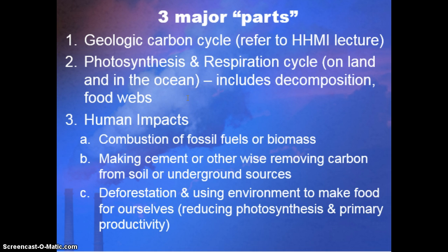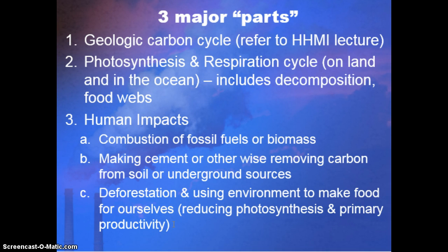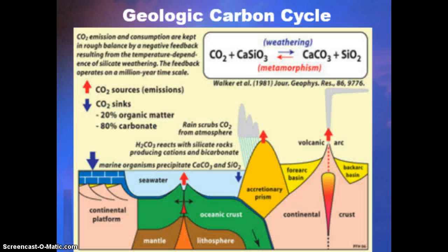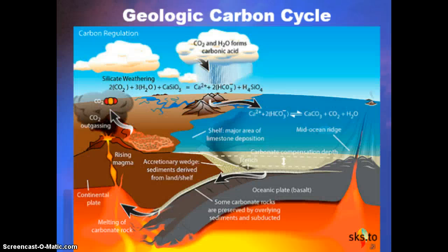Third, because our human population is so large, we have quite an impact on the carbon cycle. The three major ways we do that are: combustion or burning of fossil fuels or biomass, making cement or extracting carbon from the ground, and deforestation. When we clear land for food production, we harness an ecosystem's primary productivity for ourselves, so that energy is no longer available for other organisms. Pause and review the geologic carbon cycle from the HHMI video.